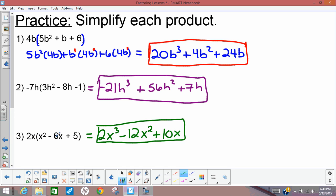2x and x squared minus 6x plus 5, when multiplied together, gives us this trinomial: 2x cubed minus 12x squared plus 10x. So that means that each of these things, 2x and x squared minus 6x plus 5, these two things are factors. Same thing up here: it's negative 7h and 3h squared minus 8h minus 1. Those are two factors of this polynomial.